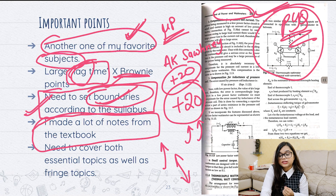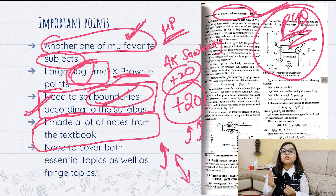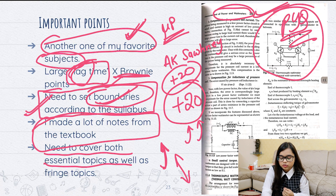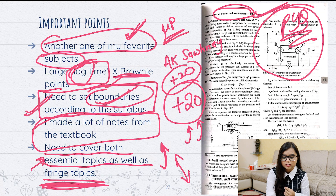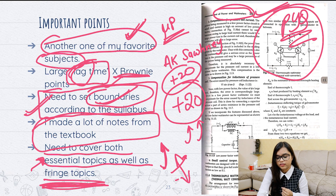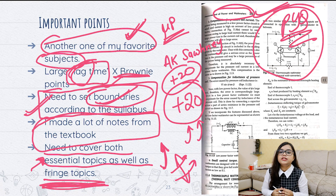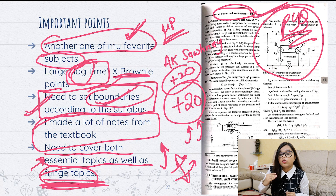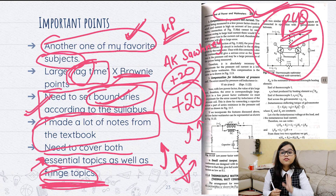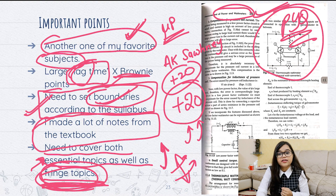I made a lot of notes from this textbook. What I used to do was: after covering one chapter, I immediately made notes so that I would not have to open that chapter or that book again. For this subject, you have to cover both essential topics as well as fringe topics. Essential things include topics like frequency meters, Q meters, and the working of a CRO — for all of these you have to be very well prepared, and I definitely recommend studying them.